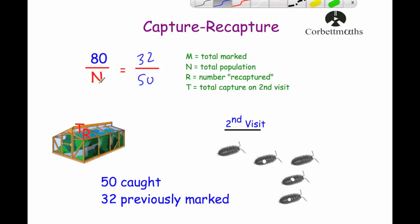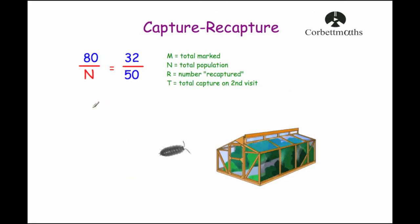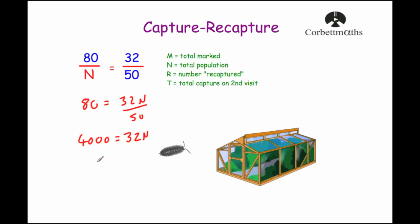Using the formula, we multiply both sides by N to get 80 equals 32N over 50. Multiplying both sides by 50 gives 4,000 equals 32N. Dividing both sides by 32 gives 4,000 divided by 32 equals 125. So N equals 125 — the capture-recapture technique gives us an estimated population of 125 woodlice in the greenhouse.